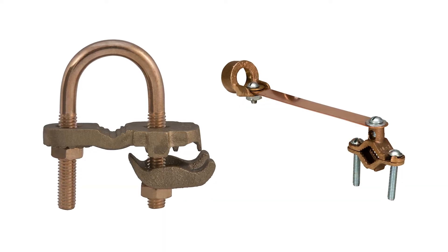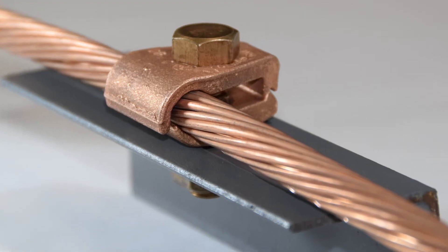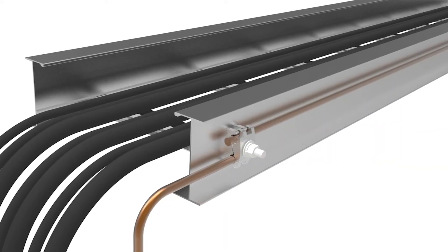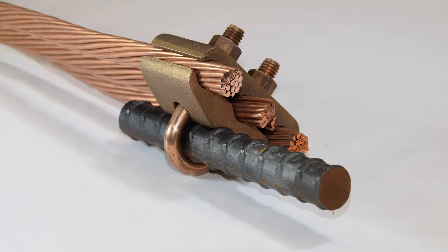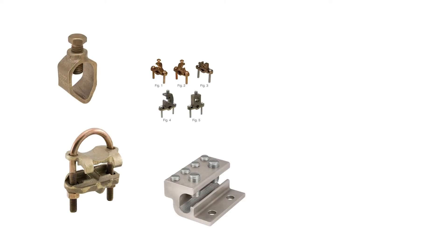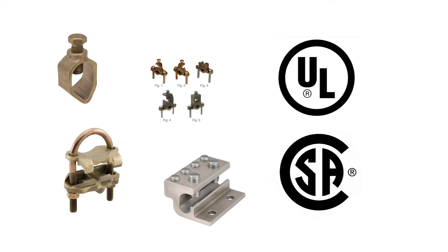Permaground mechanical connectors are used for bonding conductors to equipment, pipes, cable trays, fence posts, transformers, and a variety of other flat and round metallic surfaces. These connectors are certified to UL and CSA for grounding and bonding.